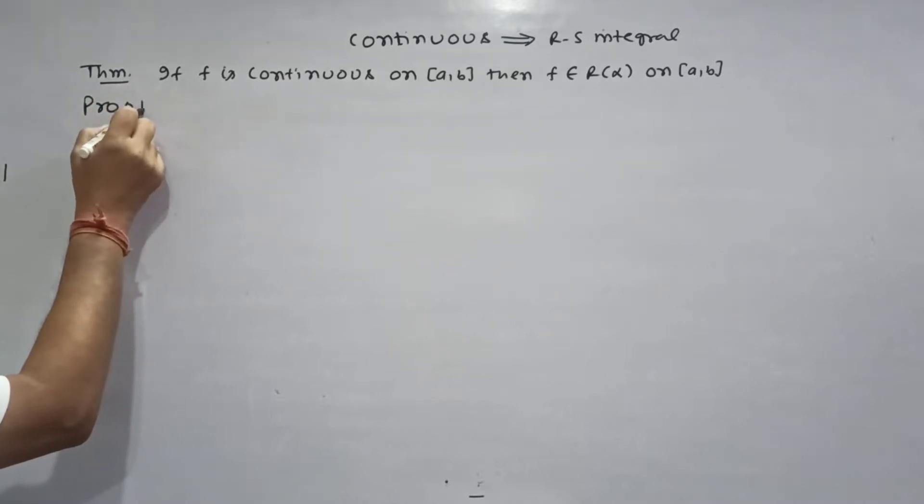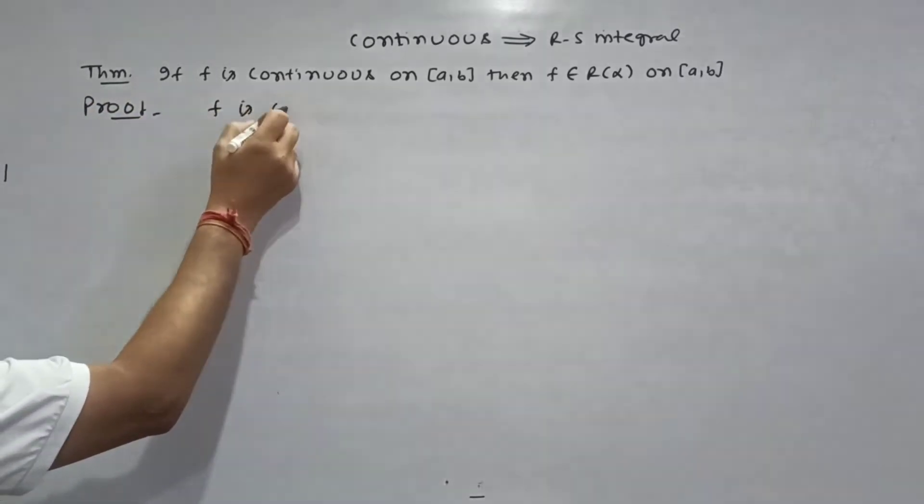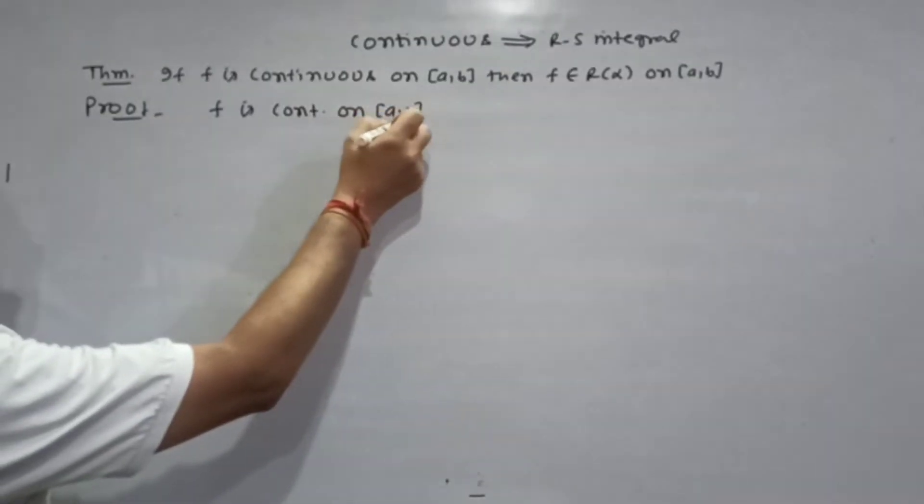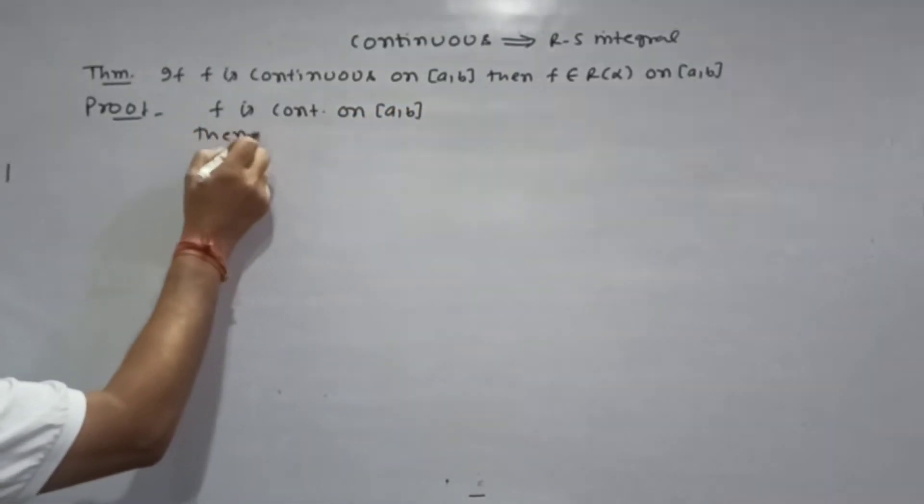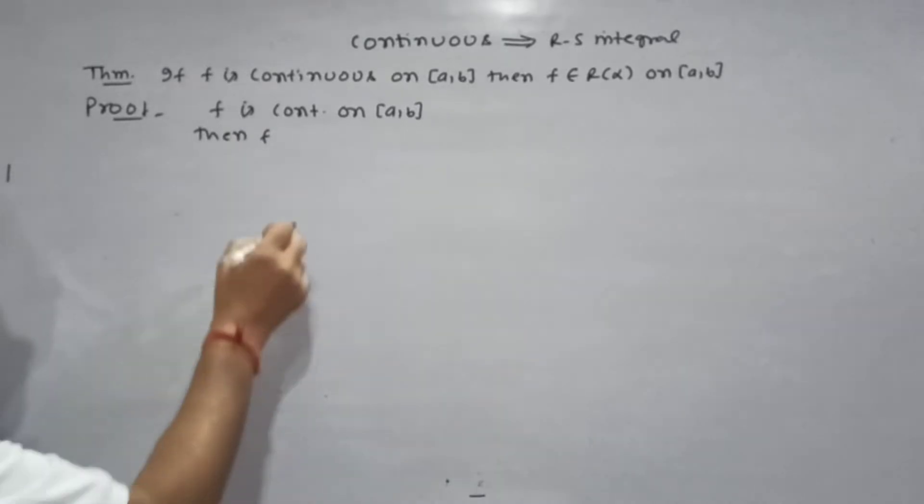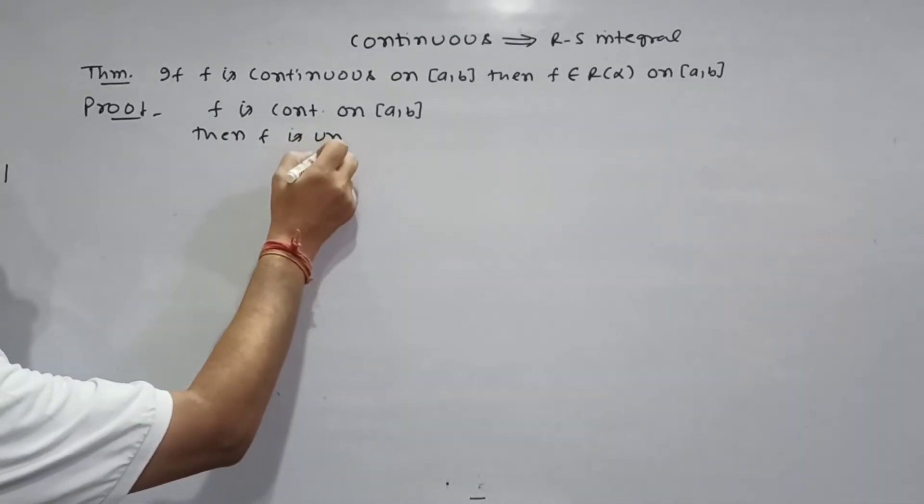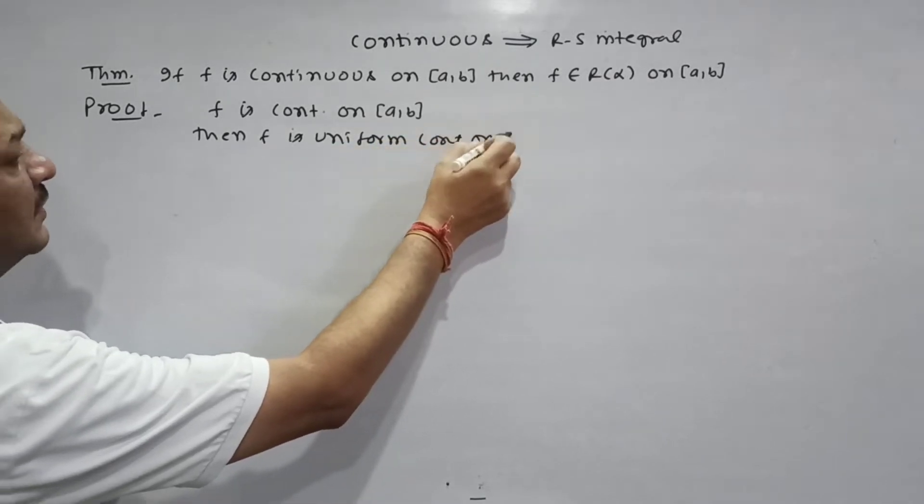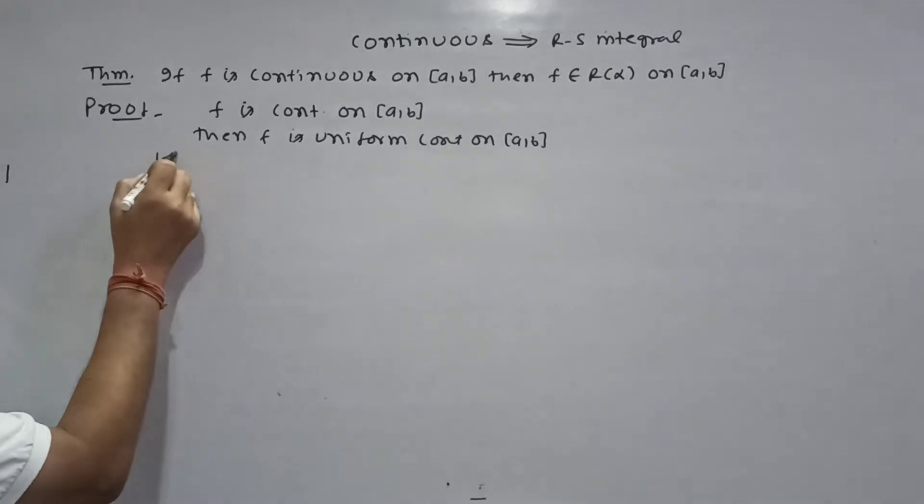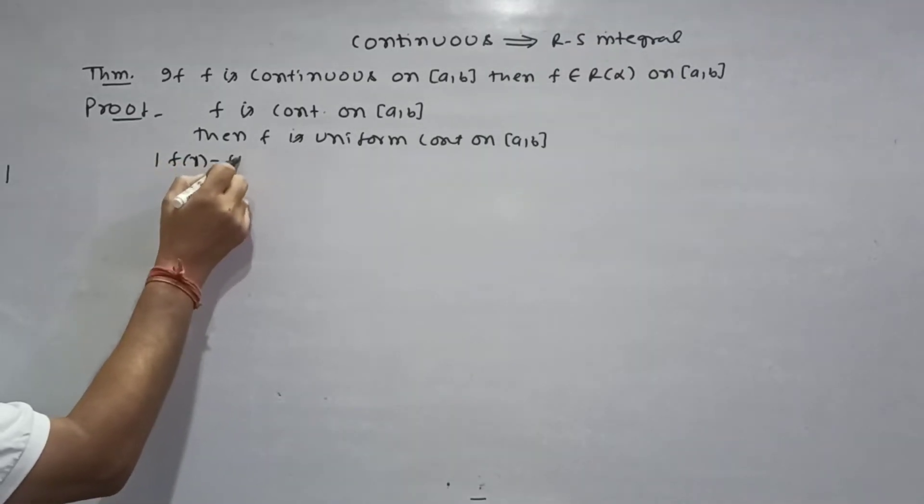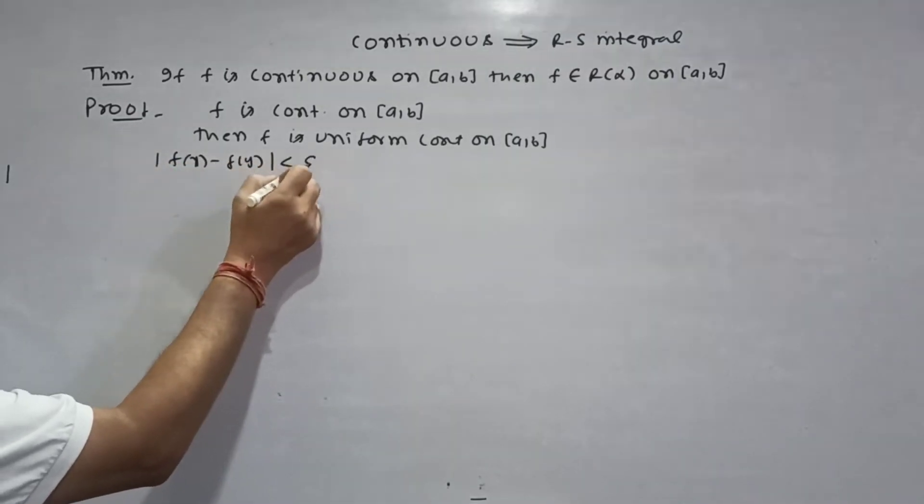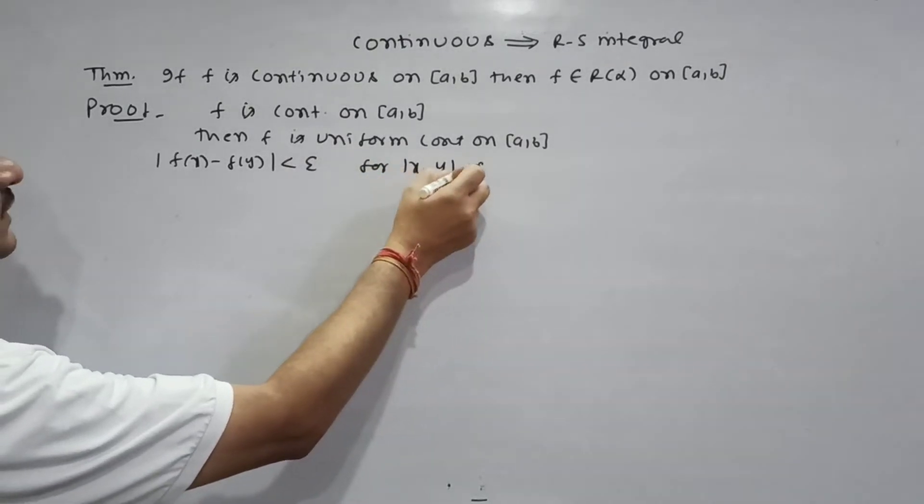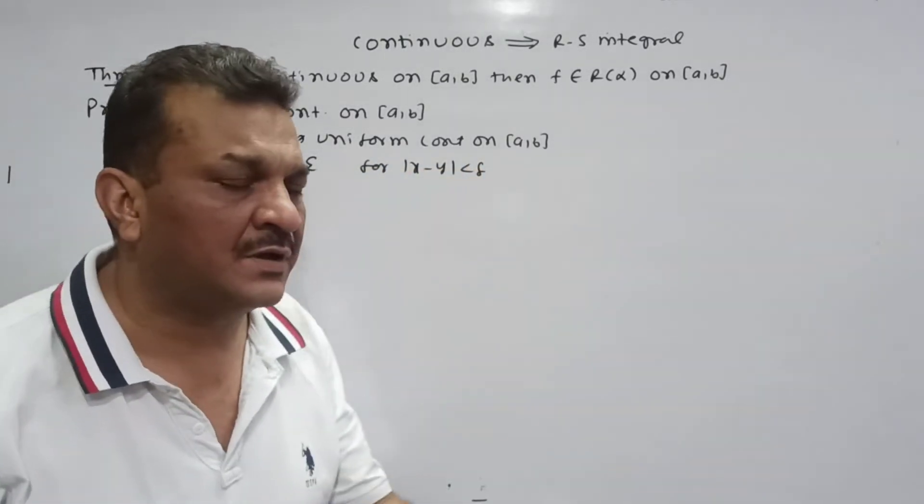F is continuous on closed interval A. Then when F continues at closed interval A, F is uniform continuous on closed interval A. This definition is Fx minus Fy less than epsilon, x minus y less than delta, delta depends upon epsilon.